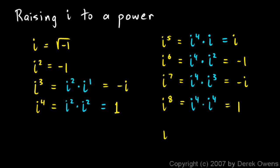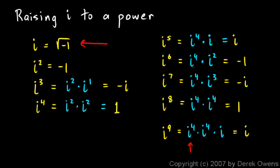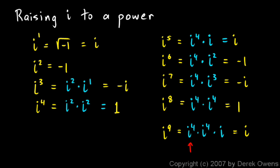Now think about i to the ninth. i to the ninth would be i to the fourth times i to the fourth times i. Every time you have i to the fourth, remember that's 1. So this is just 1 times 1 times i — it's just i. And you see the pattern: i to the 1 is i, i squared is negative 1, i cubed is negative i, i to the fourth is 1, then i to the fifth is i again, and so on. i to the tenth would be negative 1, i to the eleventh would be negative i, i to the twelfth would be 1. This pattern continues.